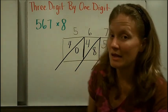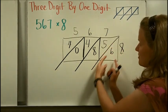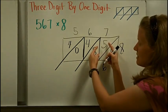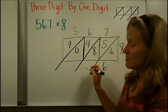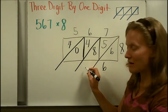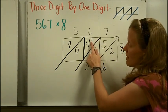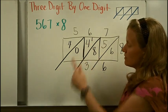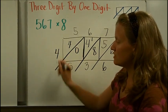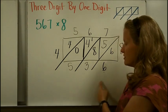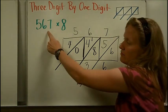Now I add diagonally, and this time there's an example of having to carry. In the first column there's nothing but 6. In the next diagonal column, 8 plus 5 is 13 — I can't write 13 in one space, so I keep the 3 and carry the 1. Then I have three numbers to add: 1 plus 4 plus 0 is 5. And in the last column there's just a 4. Reading left to right: 4, 5, 3, 6 — so 4,536 is the product of these two numbers.